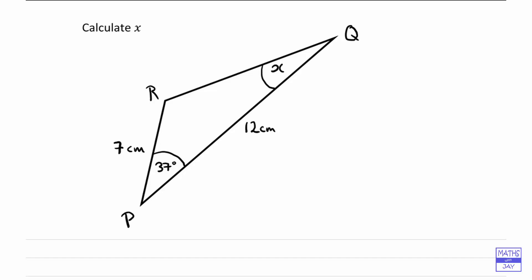So if we tried to use the sine rule here's what would happen. We'd get that the sine of angle x over a known side, so 7, is equal to the sine of angle 37 over, and then it wouldn't be over a side that we know because that would be over the length RQ.